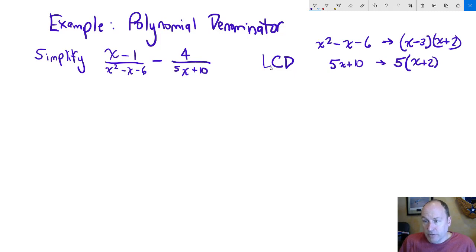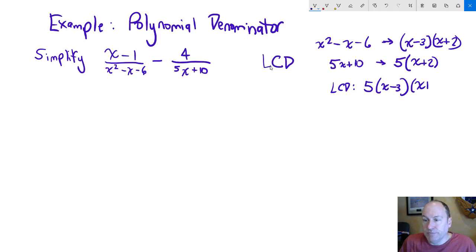Together, the lowest common denominator uses: 5 appears once, x minus 3 appears once, and x plus 2 appears once. So 5 times x minus 3 times x plus 2 is the least common denominator.